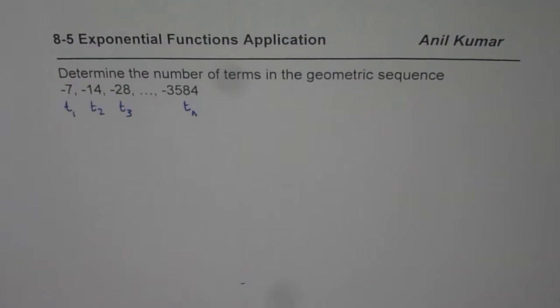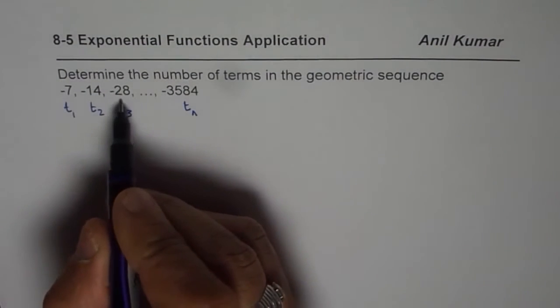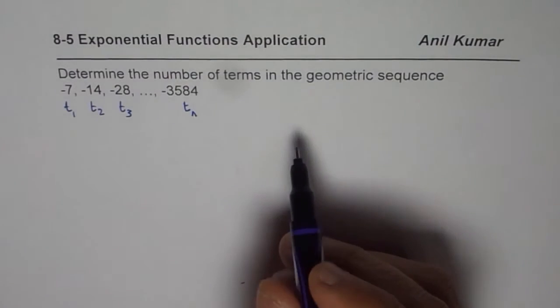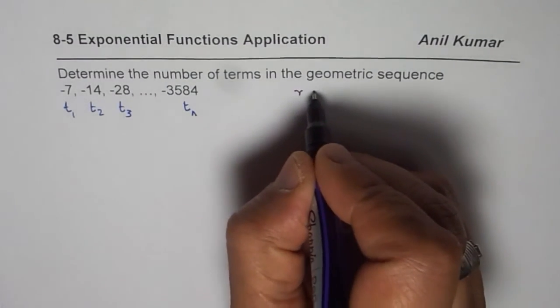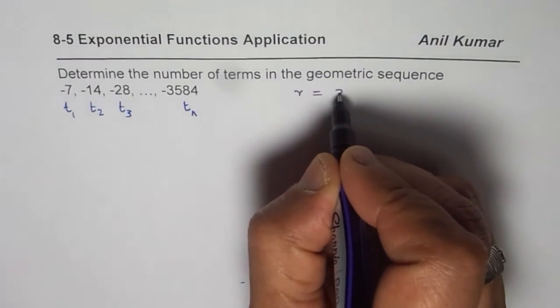Now let's analyze the sequence. The sequence is minus 7, minus 14 and so on. What do you notice? It is a geometric sequence, so every number should be a multiple by a fixed number, which we call r. So in this case, r equals 2.